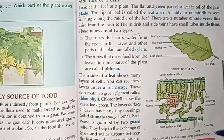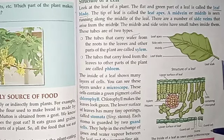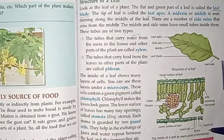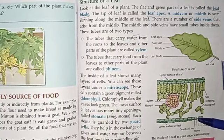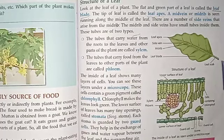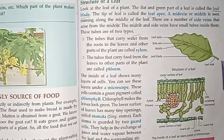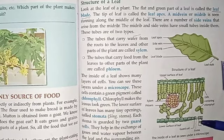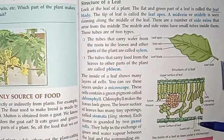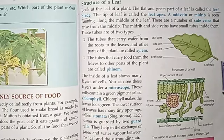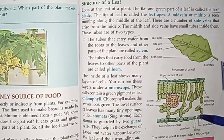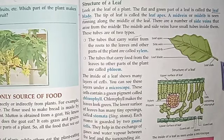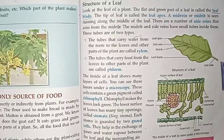Each stoma is guarded by two cells called guard cells. The guard cells control the opening and closing of the stoma, allowing gases to enter or leave the leaf.